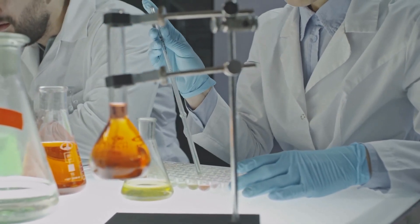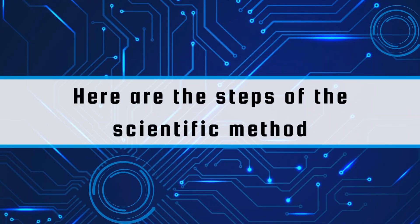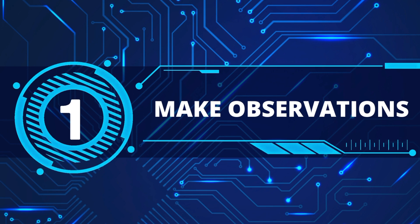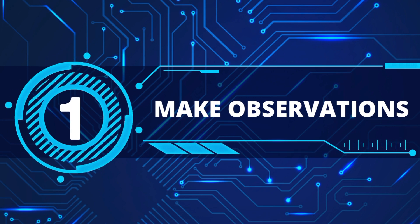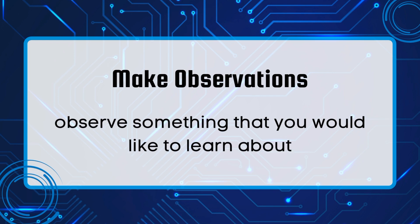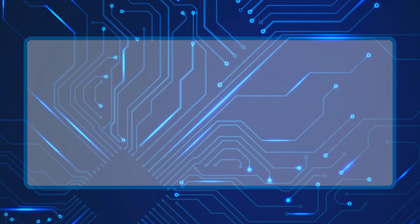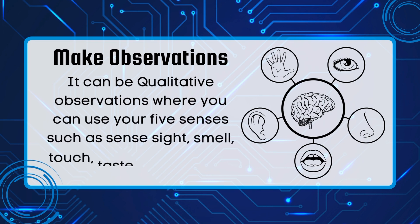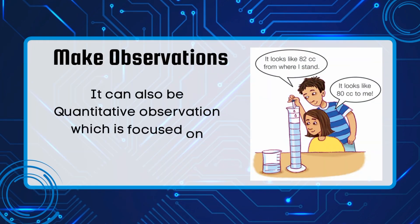Now, allow me to discuss the steps in the scientific method. First, you need to make an observation. The first step is to observe something that you would like to learn about. It can be qualitative observations, where you can use your five senses such as sense of sight, smell, touch, taste, and hearing. It can also be quantitative observations, which are focused on numbers and values.